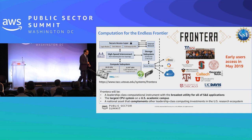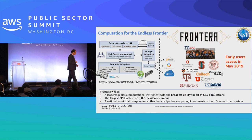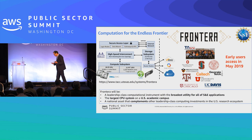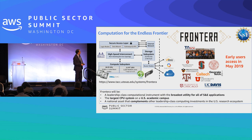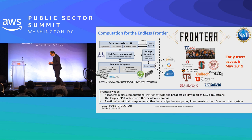Here is Frontera — an example of our leadership class system. Announced about a year ago, as of last month we have users on it. It is the largest CPU system on a US academic campus right now. It's supposed to provide the broadest capacity to the entire science and engineering community, integrates well with different cloud providers, and is at the Texas Supercomputing Center through a coalition of multiple universities. It represents a resource that allows you to do science at very large scales.